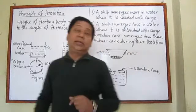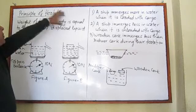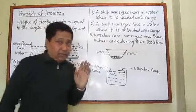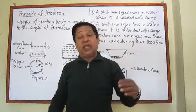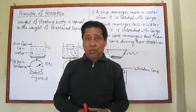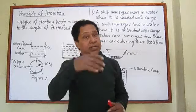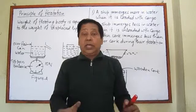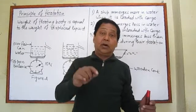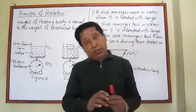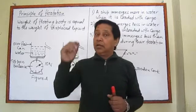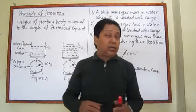This is the principle of floatation. The principle of floatation states that the weight of a floating body is equal to the weight of the displaced liquid. It doesn't matter whether the body is very light or very heavy — a ship is very heavy but floats on water, and a piece of paper is very light but also floats. In both cases, the floating body displaces water equal to its own weight.